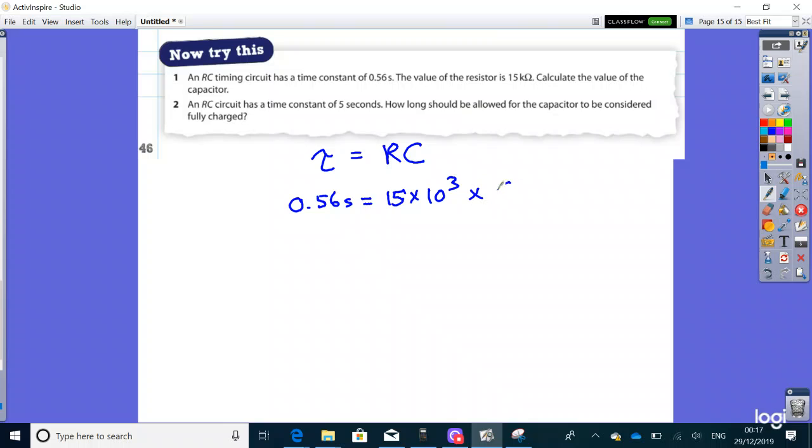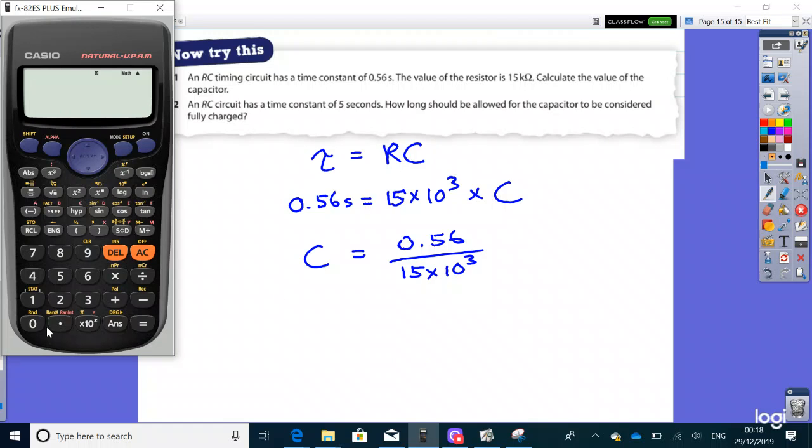So therefore C is simply that divided by this. So 0.56 divided by 15 times 10 to the power of 3. And put that in the calculator.